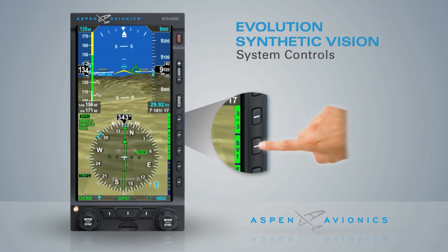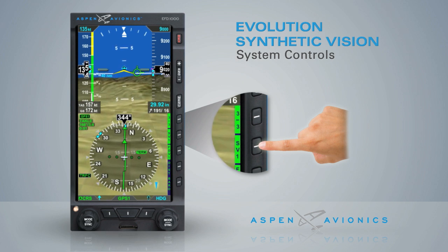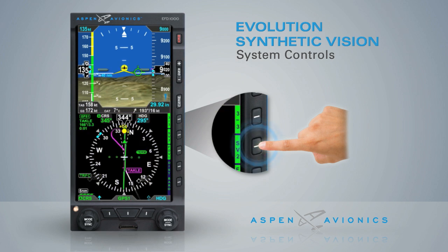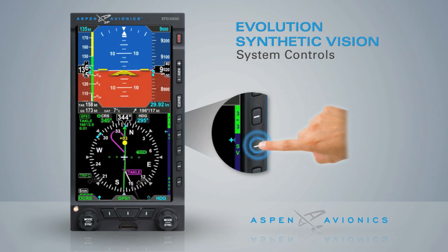Pressing the SV hotkey enables the ESV function and changes the SV hotkey label to SV1. Each successive press of the SV hotkey cycles through the Synthetic Vision views: SV1, SV2, SV3, and SV off.